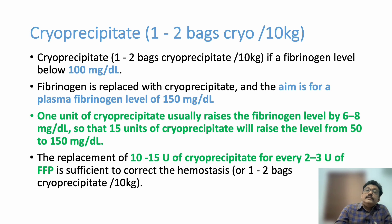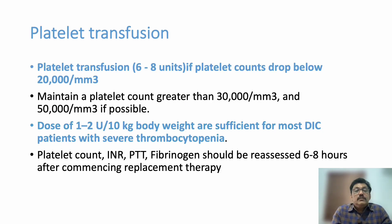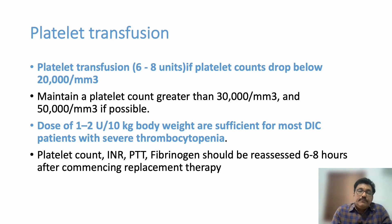The third treatment component is platelet transfusion, which is very important in DIC. Give 6–8 units of platelets if the platelet count drops below 20,000 — 1–2 units per 10 kg body weight is sufficient for most DIC patients with severe thrombocytopenia. So the three key treatments are FFP for coagulation factors, cryoprecipitate for fibrinogen, and platelet transfusion. This differs from TTP and HUS, where plasma exchange or immune-mediated drugs are used.